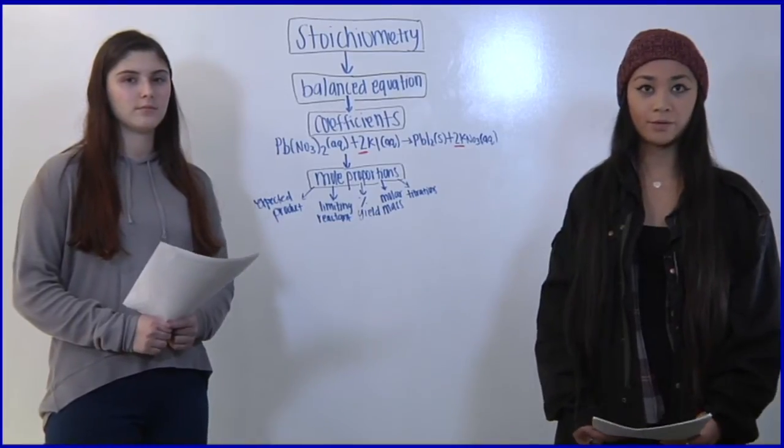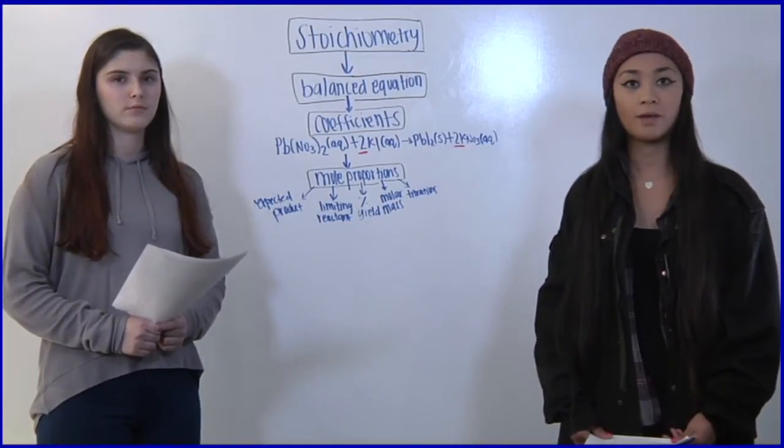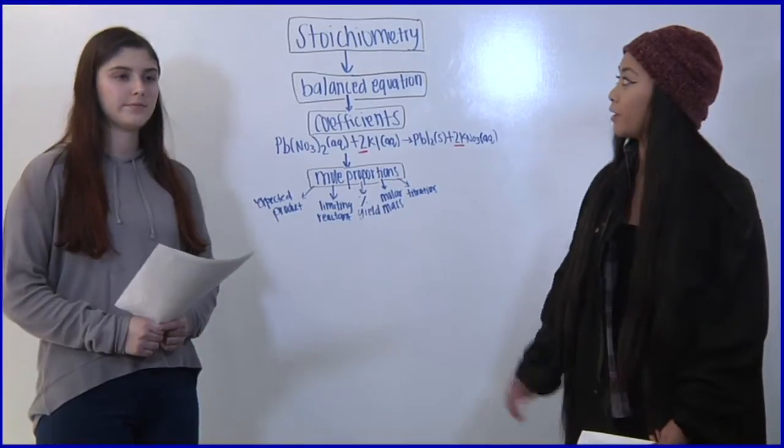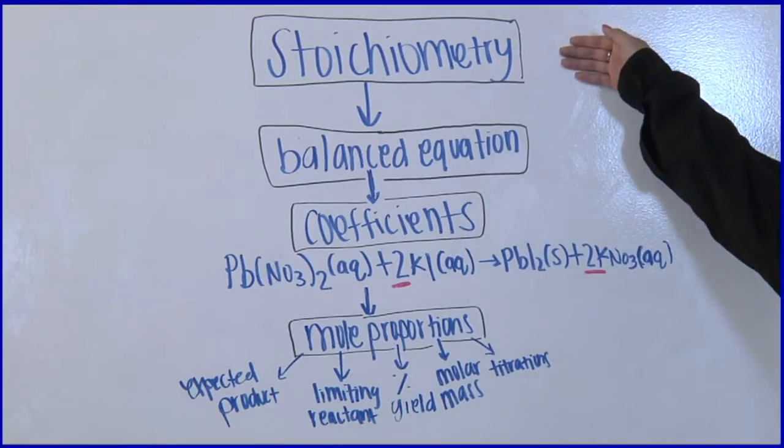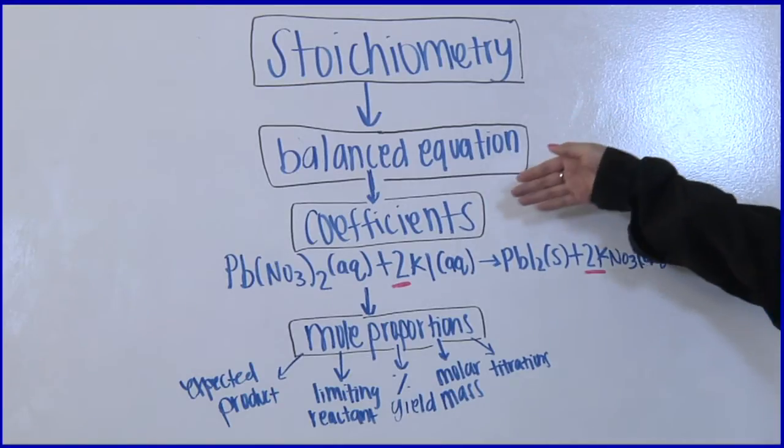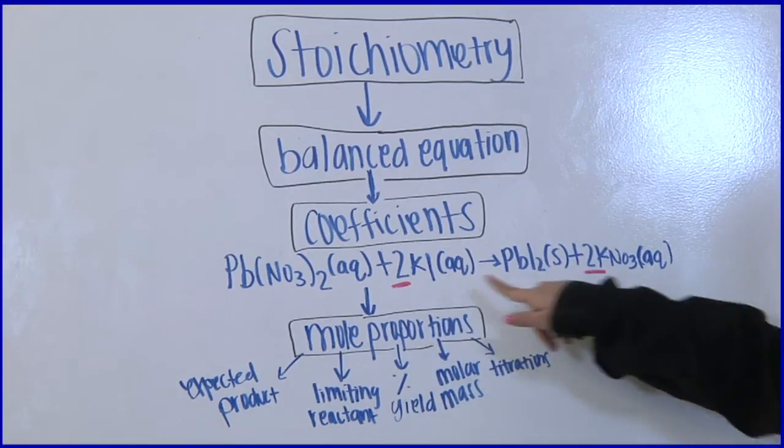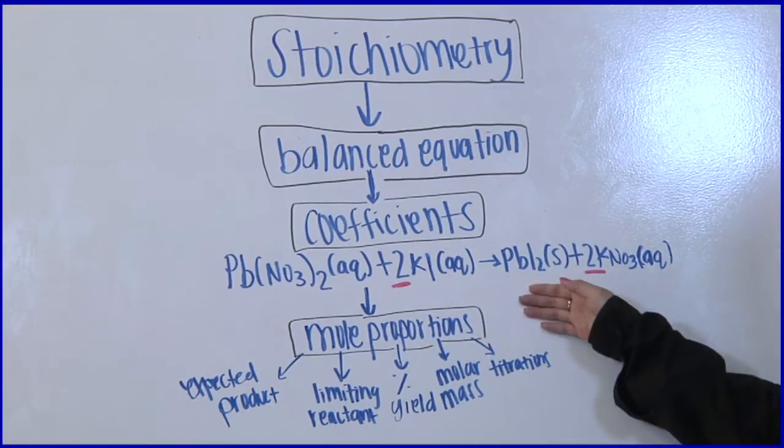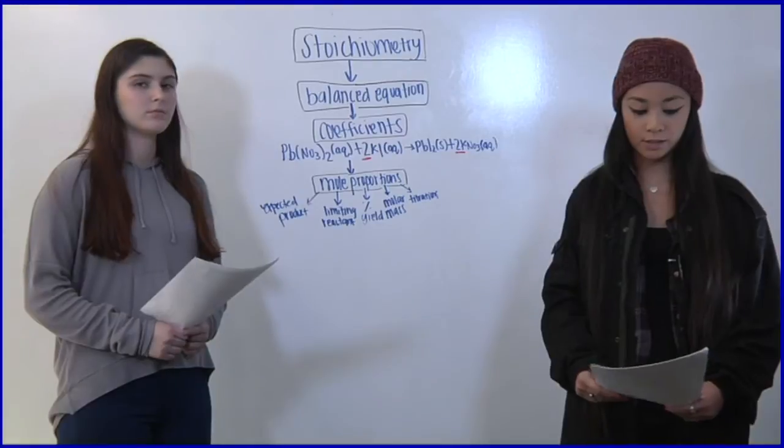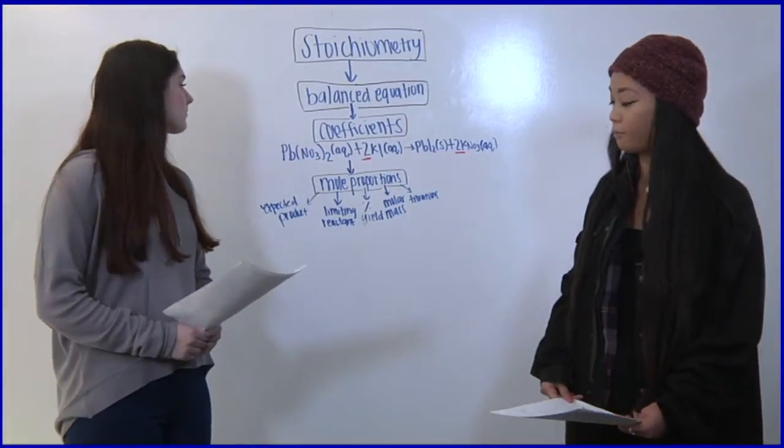Stoichiometry allows us to measure chemical reactions but in order to do this we have to have a balanced equation. So first we start with stoichiometry then we have our balanced equation with our coefficients and then we have our mole proportions. The coefficients in the equation are going to show us the number of moles.